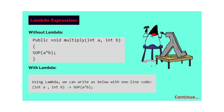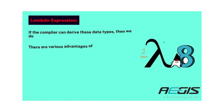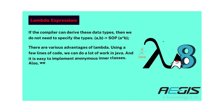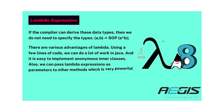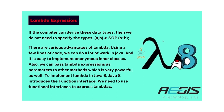First, you can see the example without Lambda Expression, and second, you can see the example with Lambda Expression. If the compiler can derive the data types, then we do not need to specify the types — for example: (a, b) -> sop(a * b).